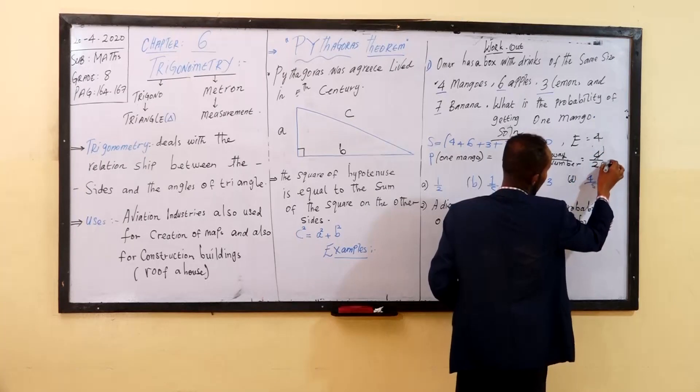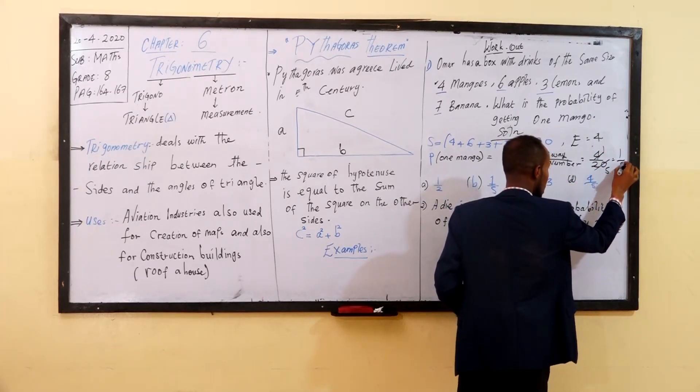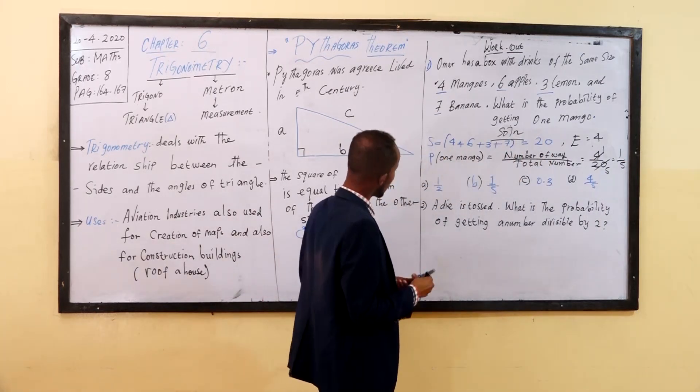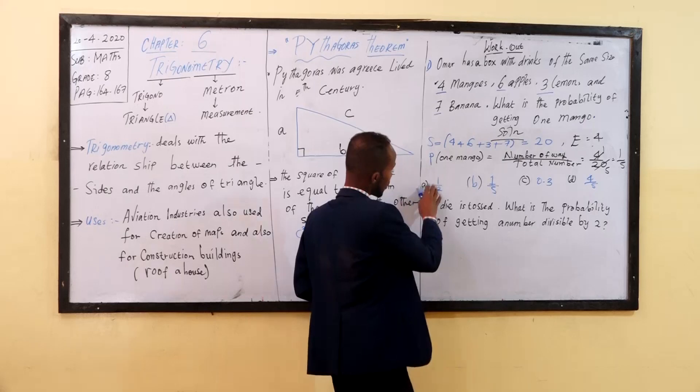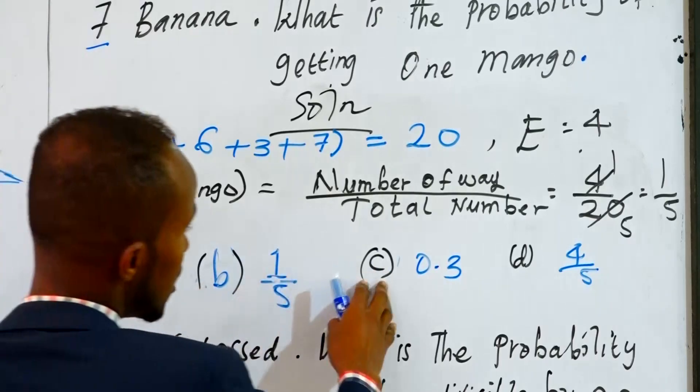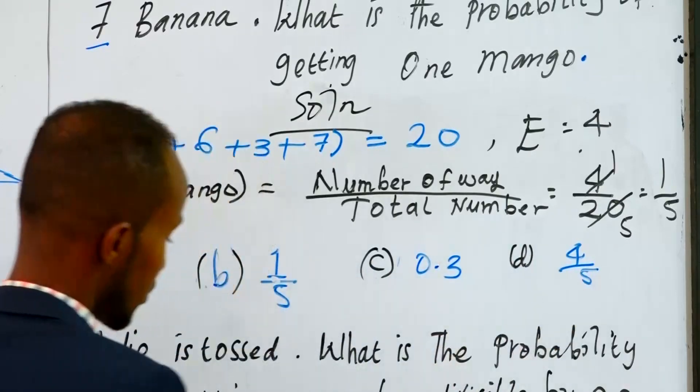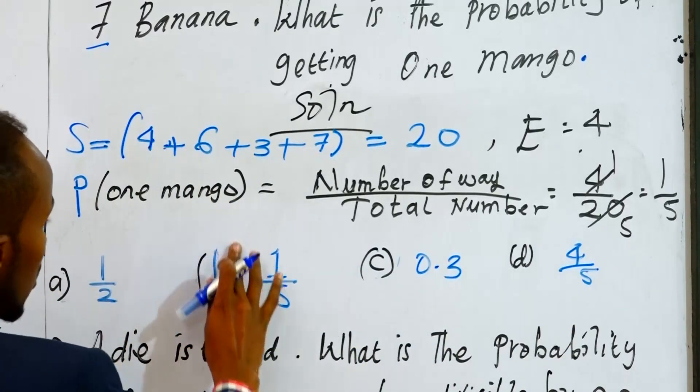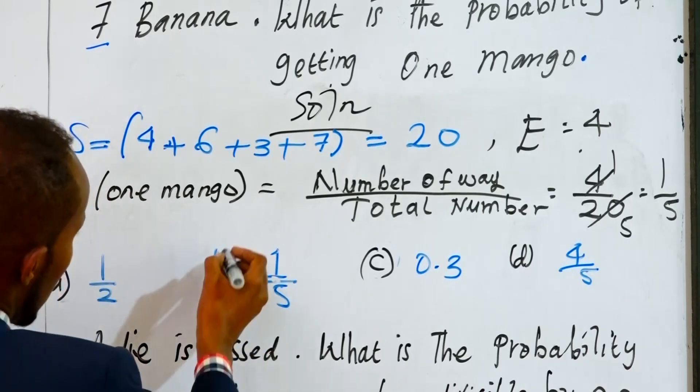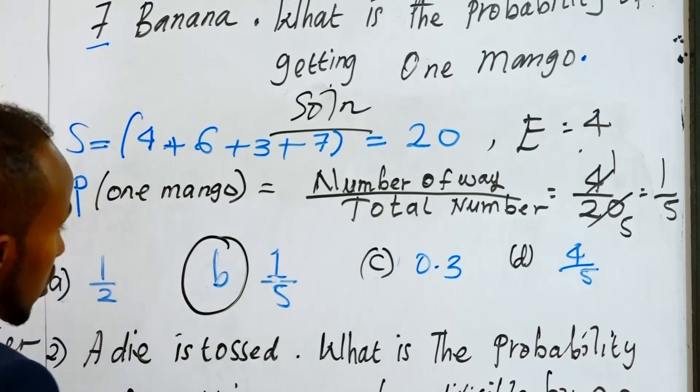This is the one that we have to use, which is four to five. So we have to use. We have to use. A: one to two, B: one to five, C: zero point three, D: four to five. This is B, one of five.